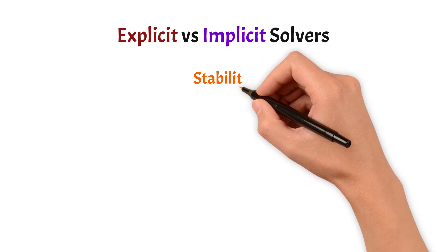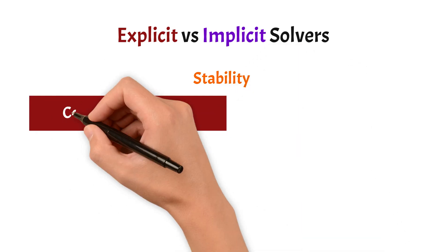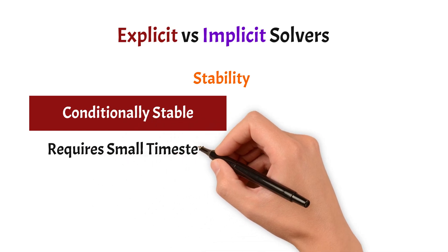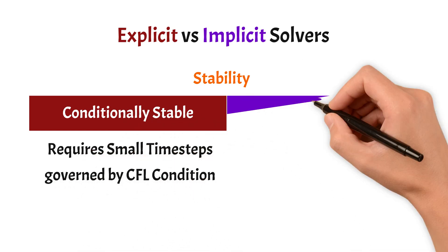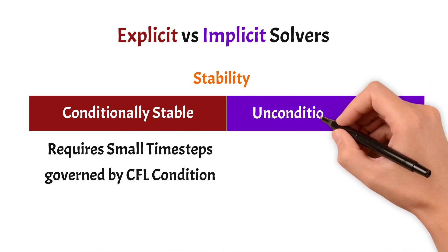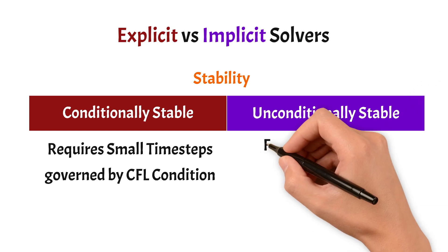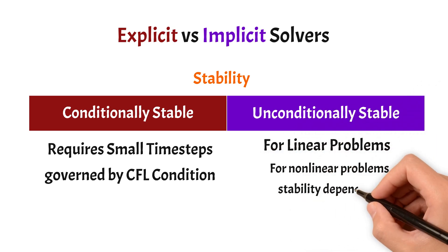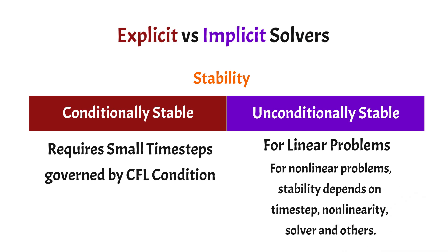The next category is the stability of these solvers. Explicit solvers are conditionally stable, and they require very small time steps governed by the CFL condition, or the Courant–Friedrichs–Lewy condition. Implicit solvers, however, are unconditionally stable for linear problems, though they have some difficulty dealing with nonlinearities in the problem.